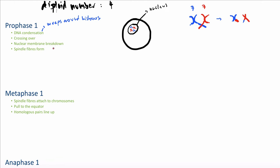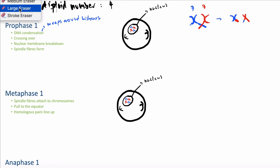In prophase 1, we also have the breakdown of the nuclear envelope, so that the chromosomes are able to move around in the cell. Finally, spindle fibers begin to form. Spindle fibers have the function of pulling chromosomes apart, and they start to form in prophase 1.